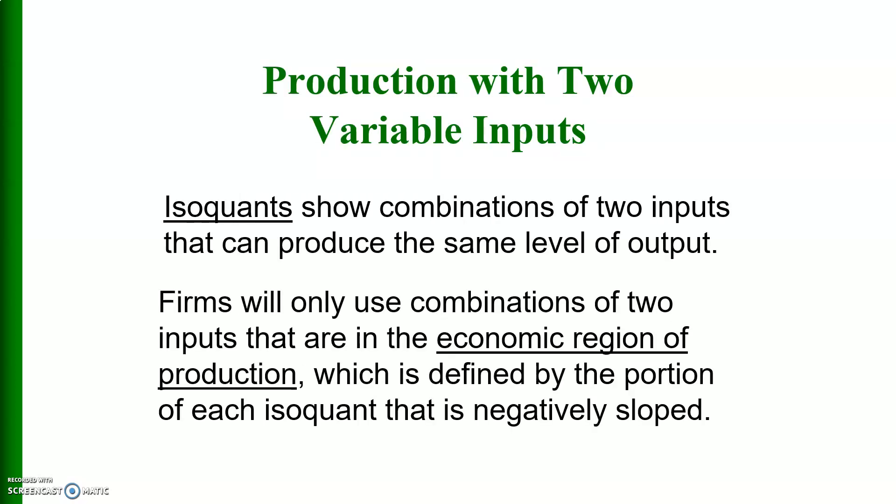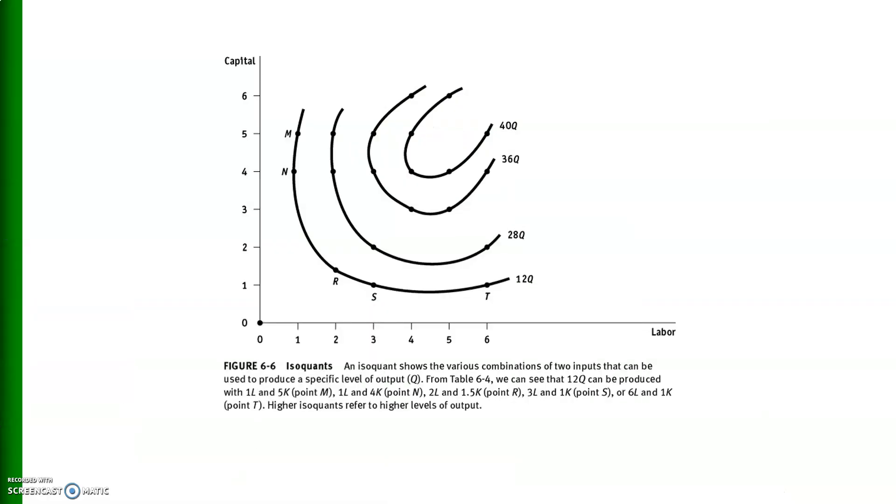Now we consider the production function with two variable inputs, where both labor and capital are variable while land and entrepreneur remain constant. We define isoquants — also known as production indifference curves — which show various combinations of two inputs that can produce the same level of output. Firms will use only combinations in the economic region, defined by the negatively sloped portion of each isoquant, as seen in this isoquant map.